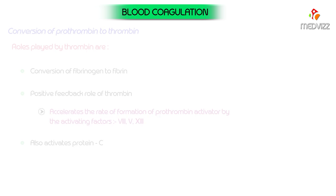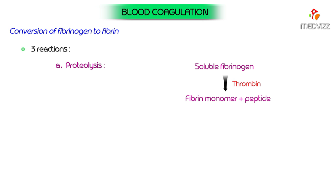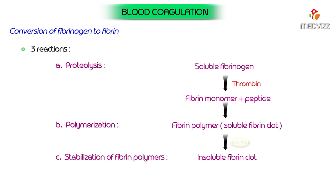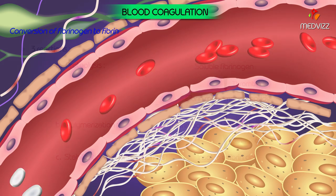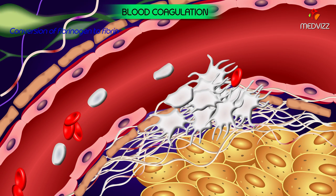Conversion of fibrinogen to fibrin involves three reactions. Proteolysis: thrombin, acting as a proteolytic enzyme, removes four low molecular weight peptide chains from each molecule of fibrinogen to convert it into a fibrin monomer. Polymerization: fibrin monomer polymerizes with another monomer to form long fibrin threads which form the reticulum of the clot; initially the clot is weak because fibrin threads are not cross-linked. Stabilization: fibrin stabilizing factor (factor 13) is activated by thrombin and, in the presence of calcium, causes formation of covalent cross-linkages between fibrin threads, adding tremendous strength to the fibrin meshwork.